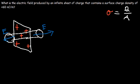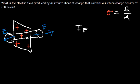Anytime the electric field leaves the object, it's an outward flux. So these two electric fields are outward fluxes, so they're additive. Now according to Gauss's law, the electric flux is equal to the total charge enclosed by the Gaussian surface divided by epsilon-naught.